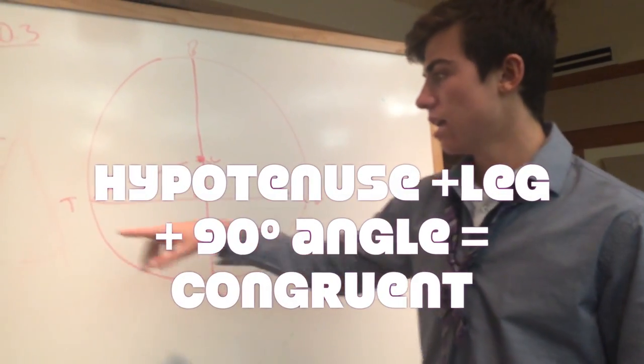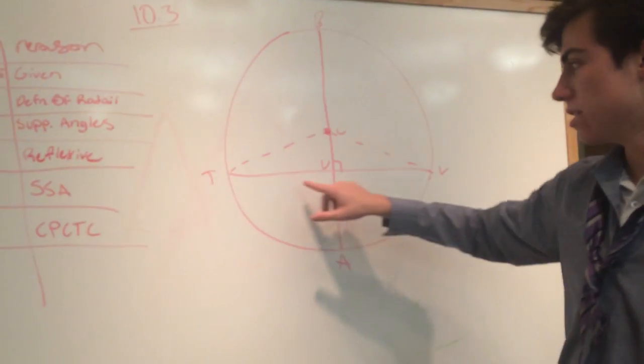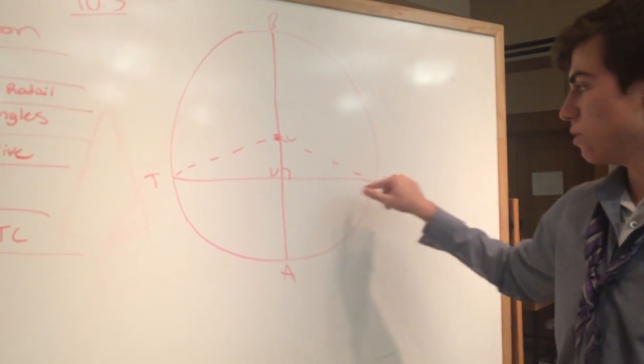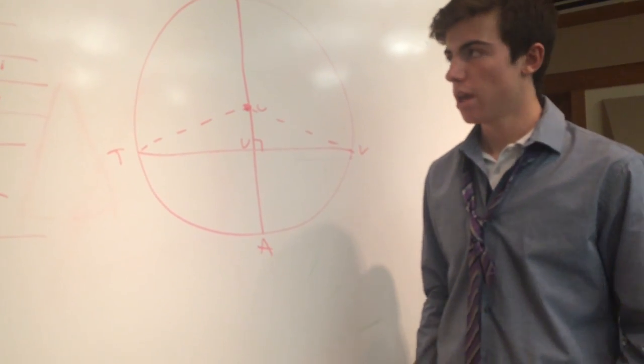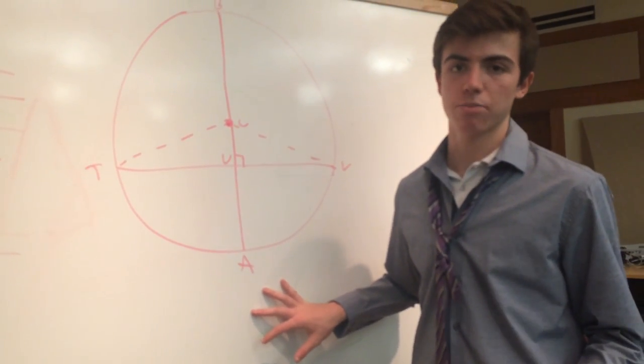Then line segment TU is the same as line segment UV because congruent parts of congruent triangles are congruent. That's the explanation. Now we'll go on to an example.